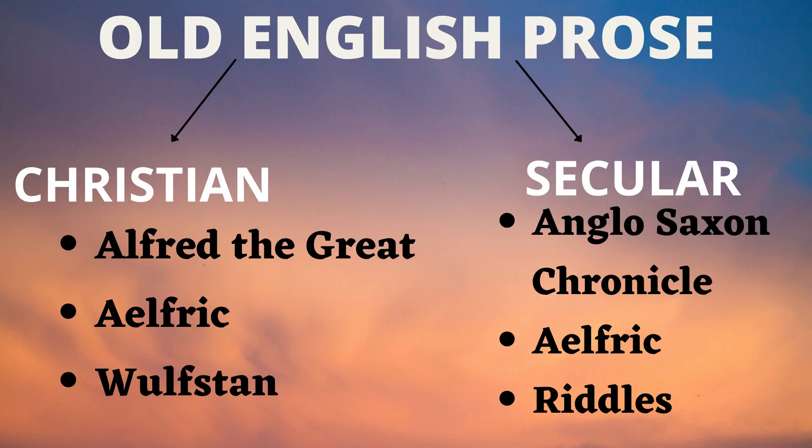Let us move into Old English Prose, which is categorized into two: Christian and secular. Alfred the Great, Ælfric, and Wulfstan come under the Christian category. The Anglo-Saxon Chronicle, Ælfric's Rills, are secular in nature.